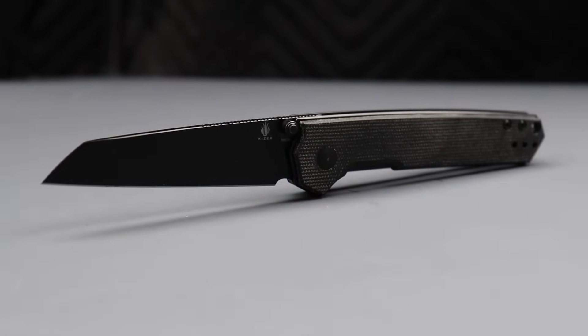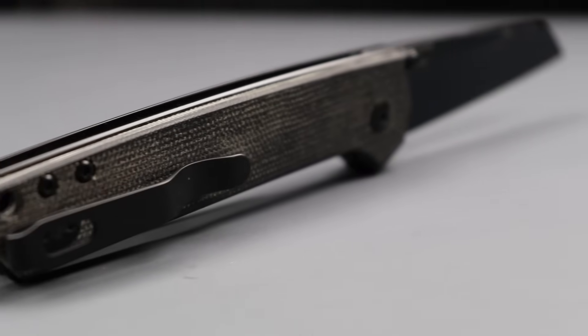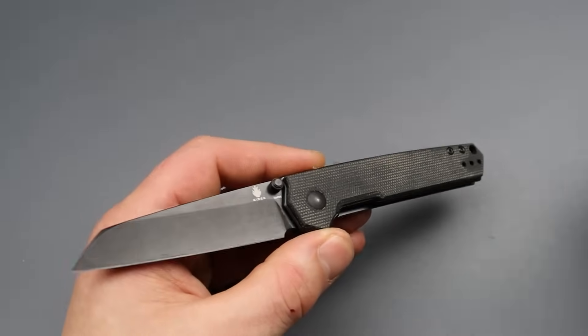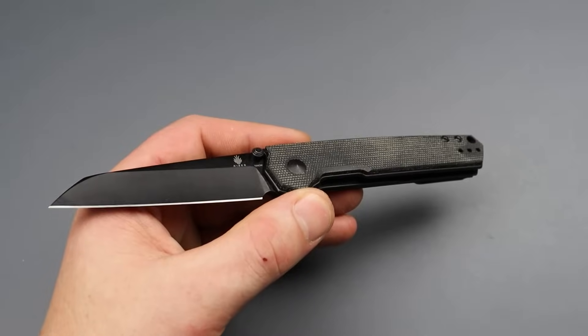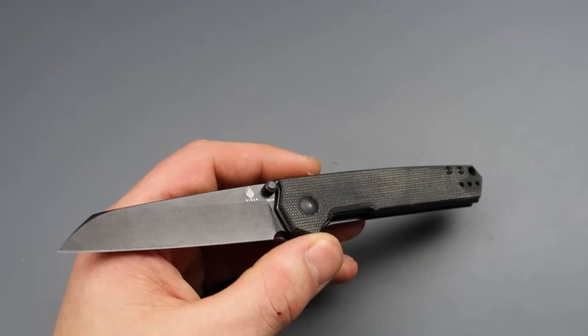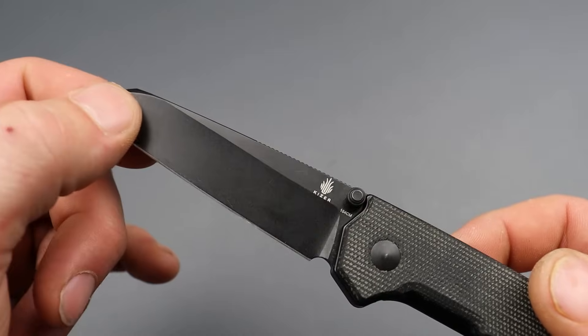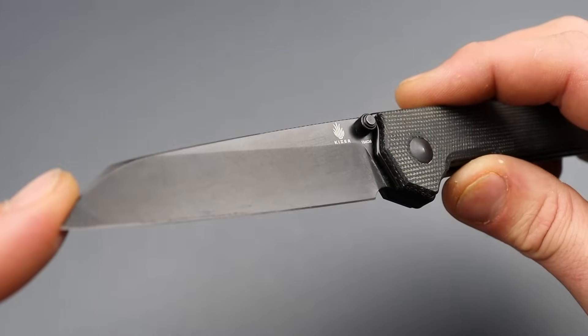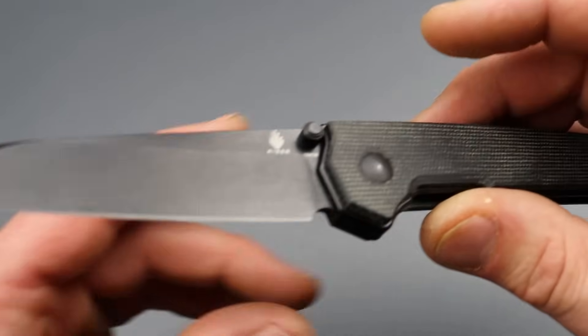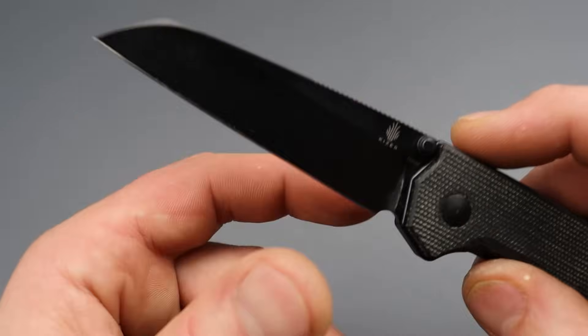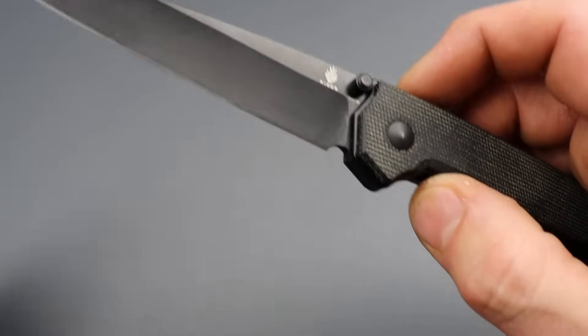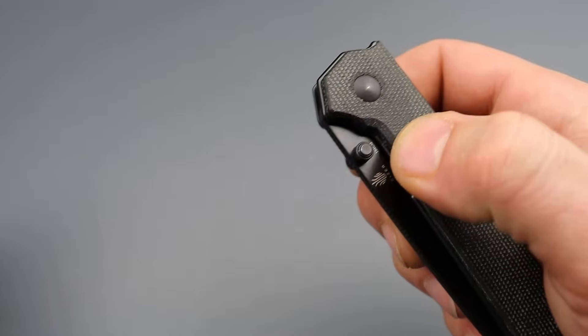This is the Kizer dome, but this is the best version they make. So they originally came out with the dome with drop point and it had washers. Then they came out with a version with bearings that was also a drop point. This one is a hollow ground sheep's foot version. So as long as you're getting the sheep's foot version, it'll be this version. It comes in two different Micartas, 154 CM, super deep hollow grind, extremely smooth on the drop.